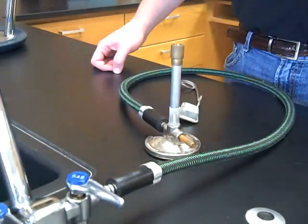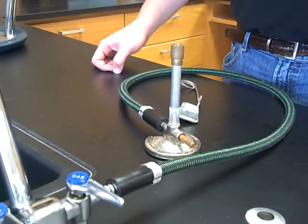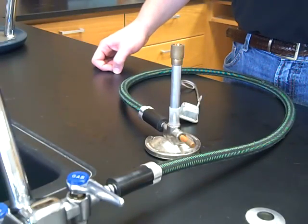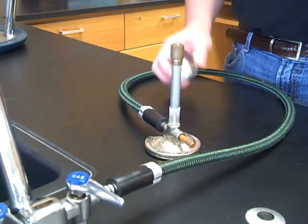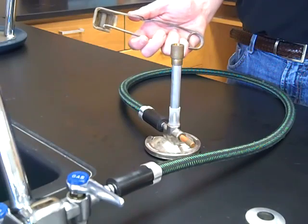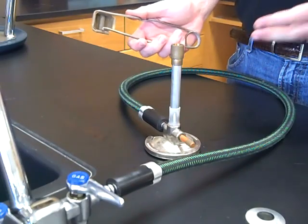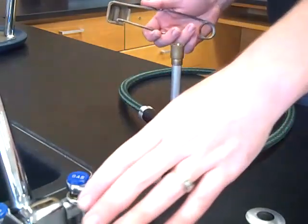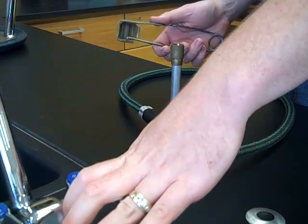When you're ready to ignite the Bunsen burner, it's a two-handed operation. Only one person should be operating the Bunsen burner at a time. In one hand, you hold the striker, which is a simple flint and steel device. You squeeze it and a spark is produced. Your other hand goes on the gas jet supply handle itself.